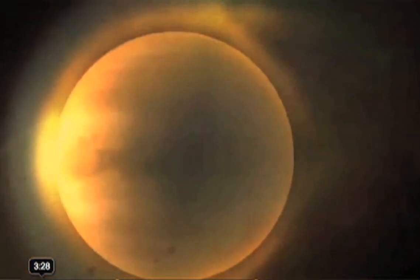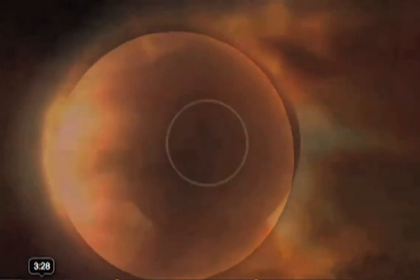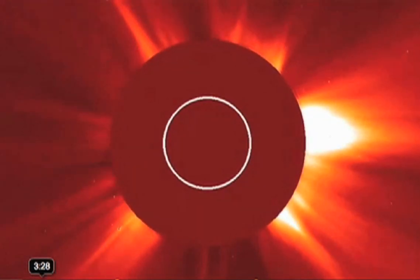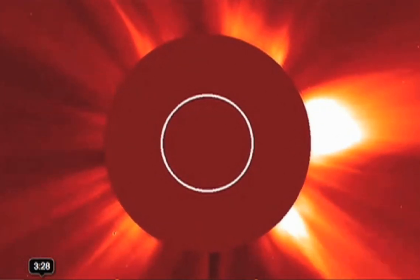This was the most powerful sunstorm ever recorded. From the 28th of August 1859 until the 2nd of September, numerous sunspots and solar flares were observed on the surface of the sun. Just before noon on the 1st of September, British astronomer Richard Carrington witnessed the largest solar flare ever recorded.